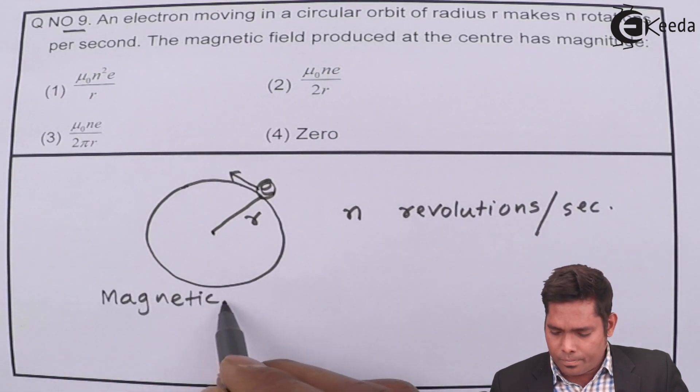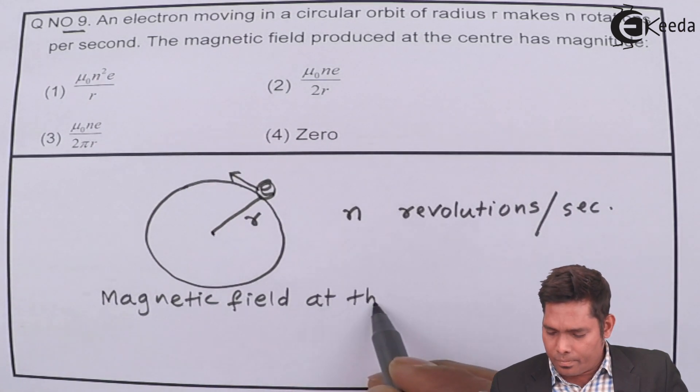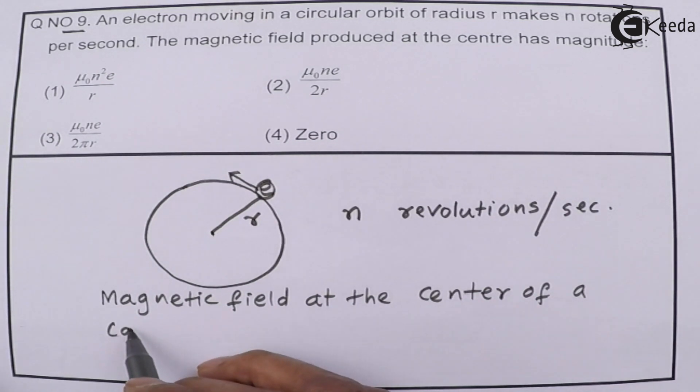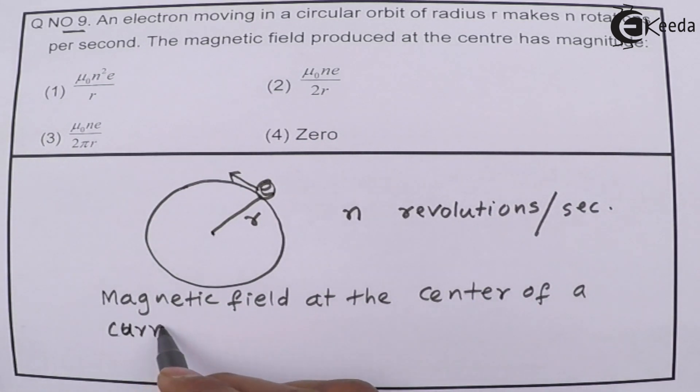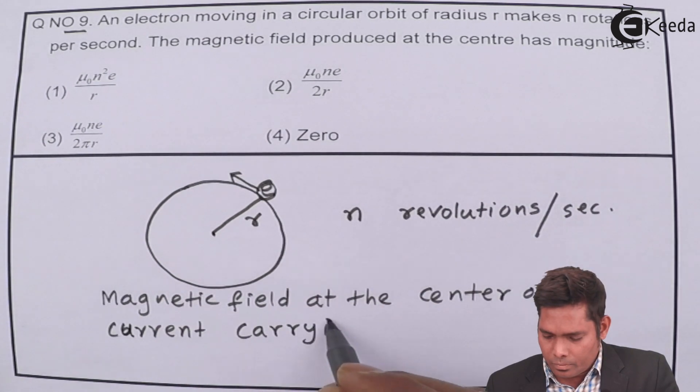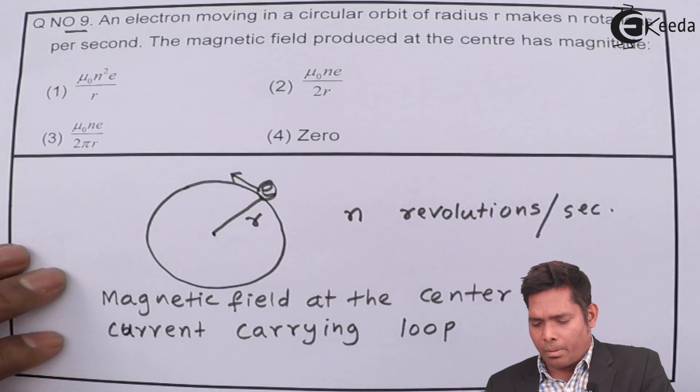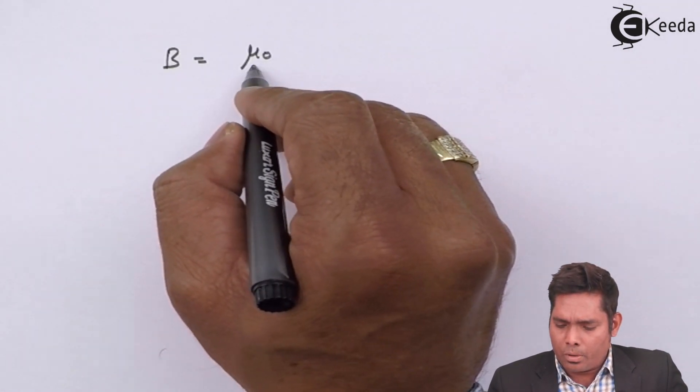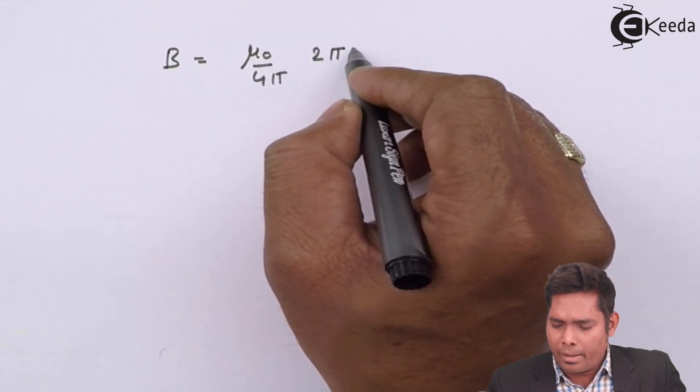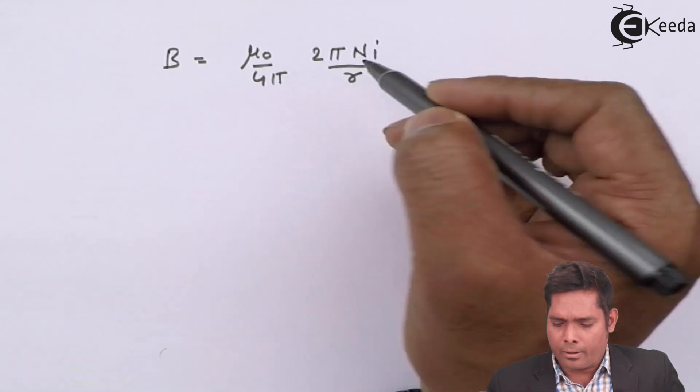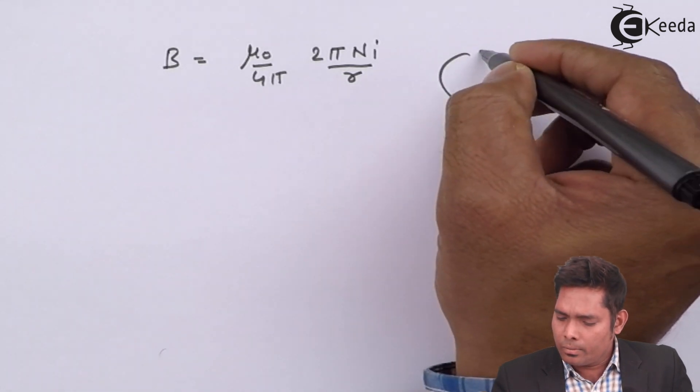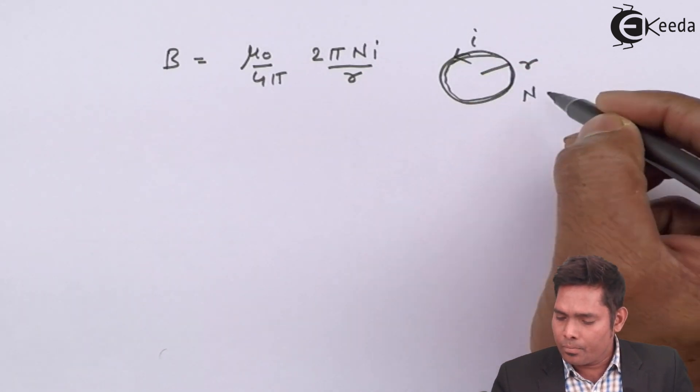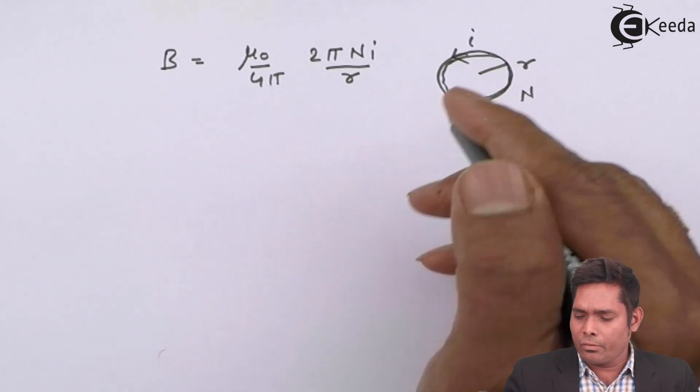The magnetic field at the center of a current carrying loop is given by B, the magnetic field equals to mu naught upon 4 pi, 2 pi n i divided by r. This is the formula. As i is the current, r is the radius and the number of turns of coils is n. Then, this is the formula for magnetic field at the center here.